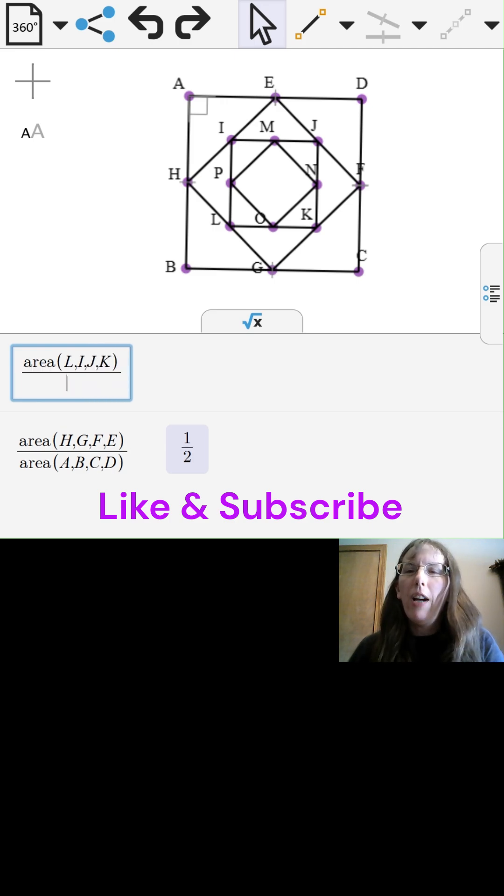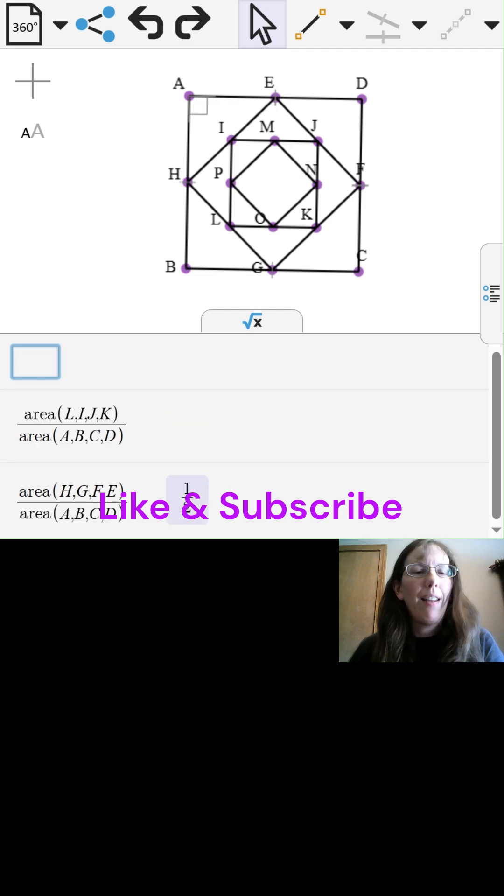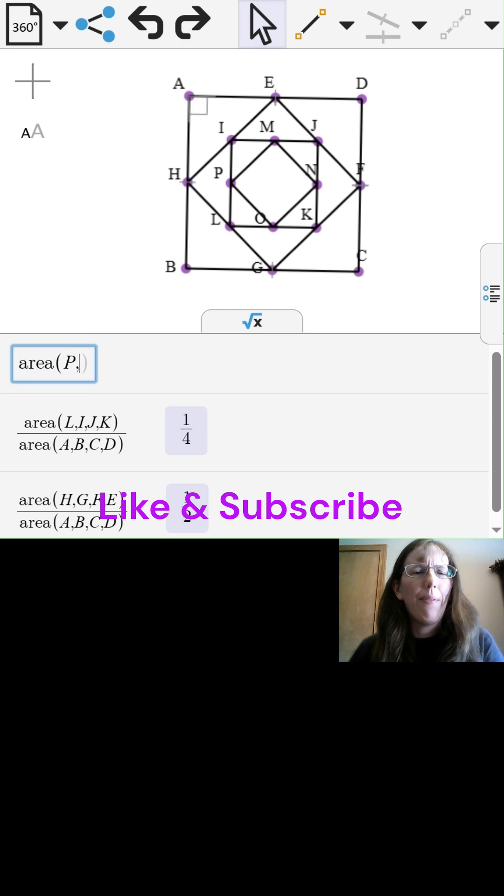Next, I'll find the area of the third square to the first square. Ah, that one's one-fourth. A half of a half is a fourth.